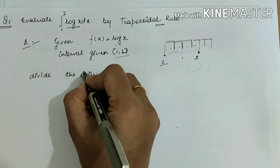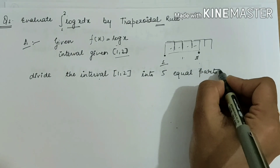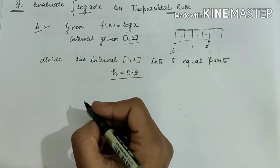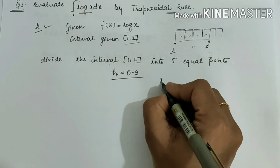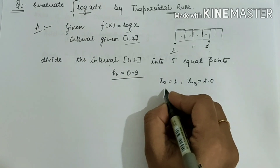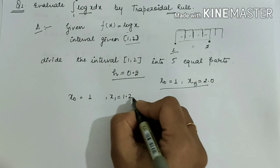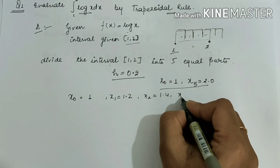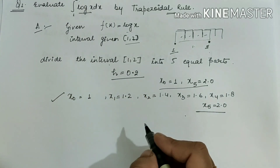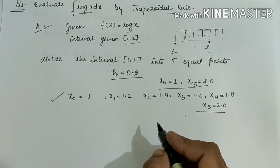I am dividing this interval into 5 equal parts. So h = (2 − 1)/5 = 1/5 = 0.2. Therefore: x0 = 1.0, x1 = 1.2, x2 = 1.4, x3 = 1.6, x4 = 1.8, x5 = 2.0. These are the values of x, and with respect to all those values we can find the corresponding values of y.